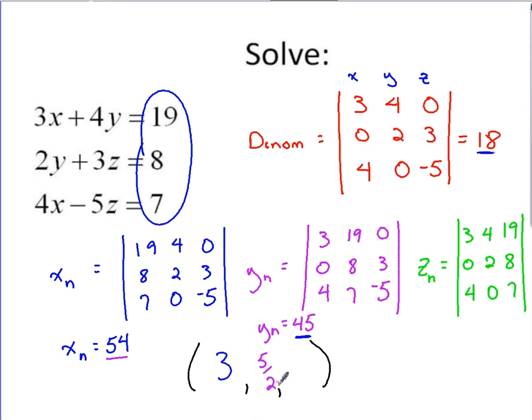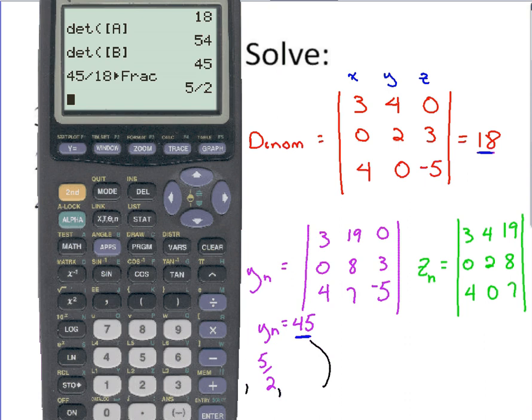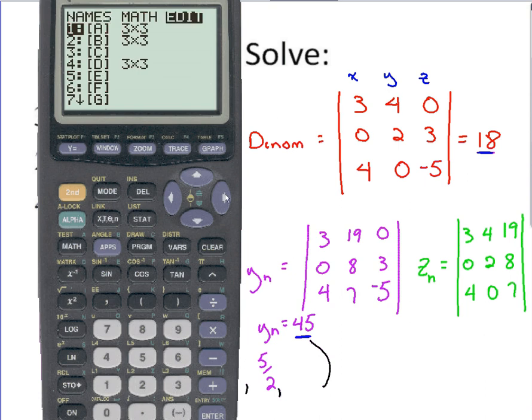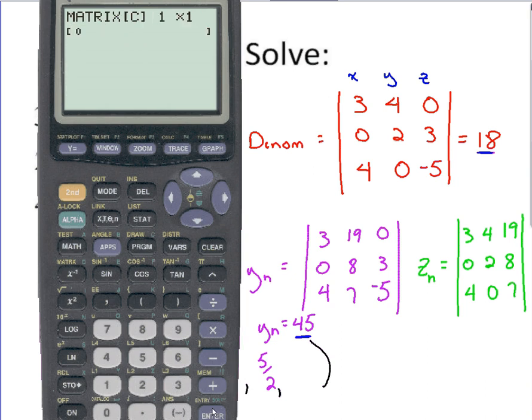The last one, Z. One more time through this process. For Z, if I go to the matrix menu, go over to Edit. Let's use C this time, just to distinguish. We want to do a 3 by 3. Top row, 3, 4, 19. Second row, 0, 2, 8. Last row, 4, 0, 7. Double check. Looks good. Quit.